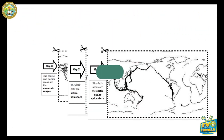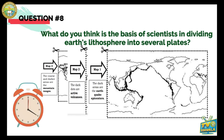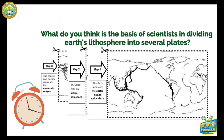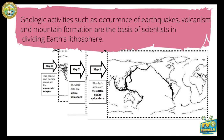You have seen the location of volcanoes, mountain ranges, and the majority of earthquake epicenters. What do you think is the basis of scientists in dividing Earth's lithosphere into several plates? Geologic activities such as seismicity — the occurrence of earthquakes — volcanism, and mountain formation are the basis of scientists in dividing Earth's lithosphere.